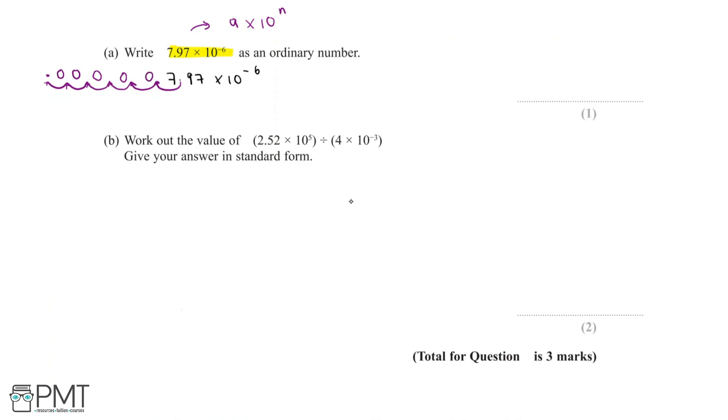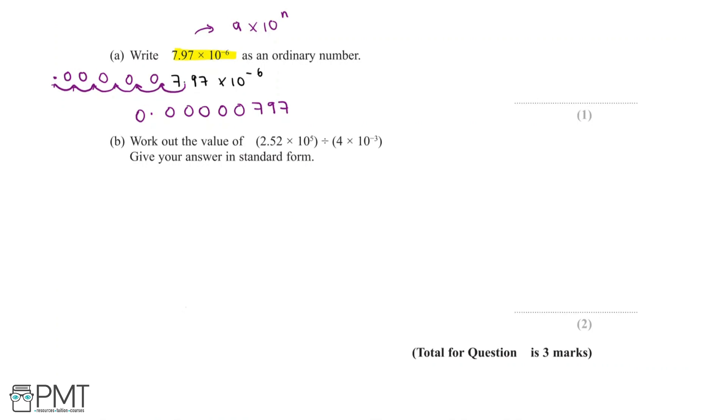So we end up with 0.0000797. But we also have to remember that there's a 0 that comes before the decimal point. When we express 7.97 × 10^-6 as an ordinary number, we've moved the decimal place 6 places to the left, leaving us with 0.0000797.